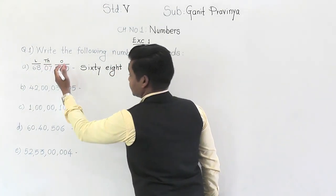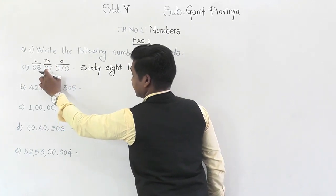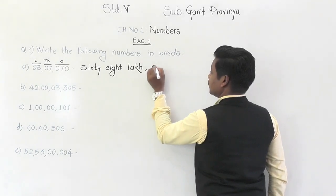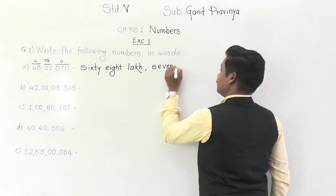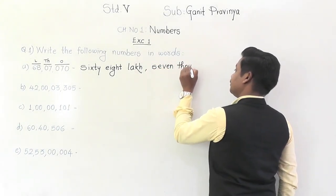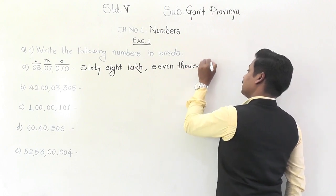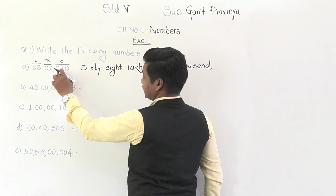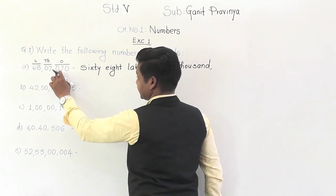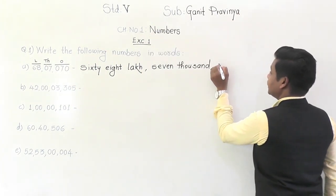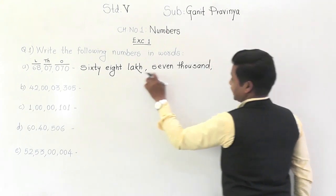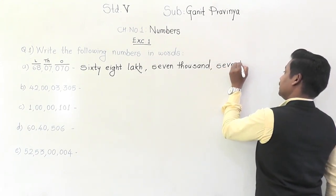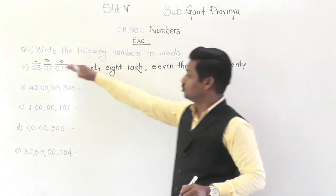Then come towards the next group — thousands — there is 07, meaning 7 thousand. And the last group is ones — 070 means only 70. So directly we can say: 68 lakhs 7 thousand 70. This is the number name for this numeral.